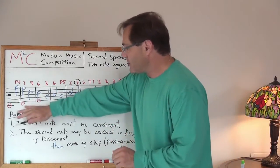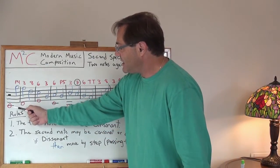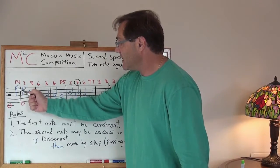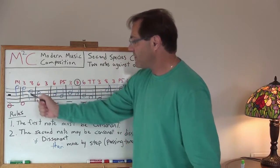Anyways, let's get on with our example here. So we've got now a C going against a G. Well, that's a perfect fourth.